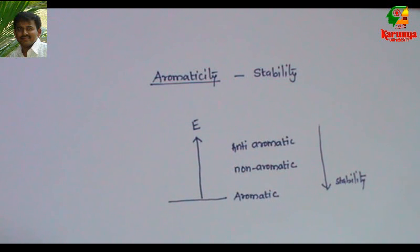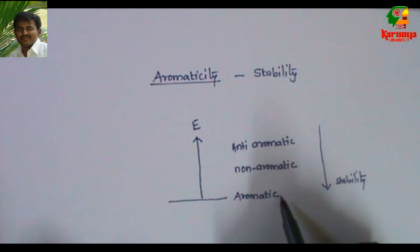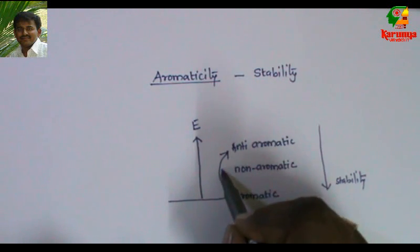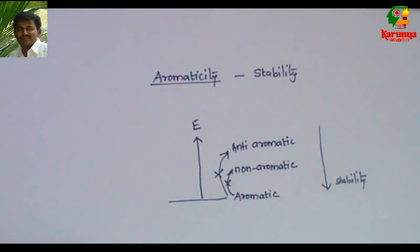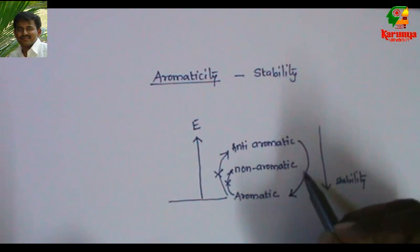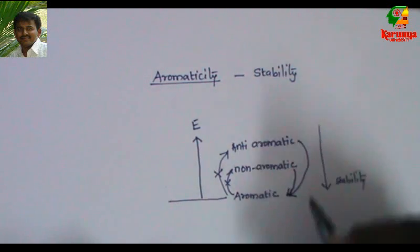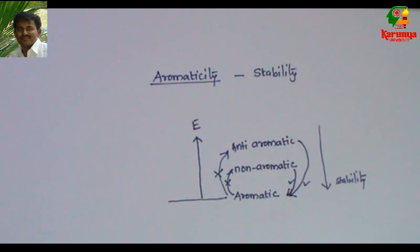This stability order is very important because it decides the chemical and physical properties of a compound. An aromatic compound, since it is more stable, will not prefer to become anti-aromatic or non-aromatic, which have higher energy and less stability. On the other hand, anti-aromatic and non-aromatic compounds try to become aromatic. If there is any possibility for them to become aromatic, that reaction will be very facile, because aromaticity offers the highest stability.